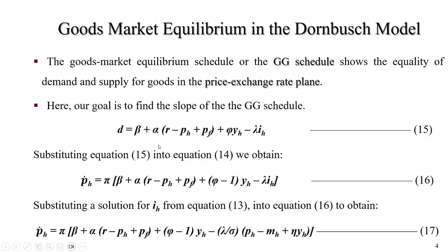Goods market equilibrium in the Dornbusch model. The goods market equilibrium schedule or the GG schedule shows the equality of demand and supply for goods in the price-exchange rate plane. Here, our goal is to find the slope of the GG schedule.